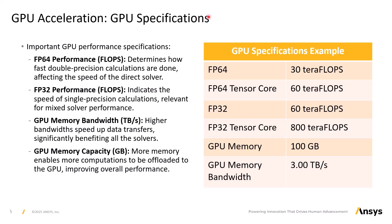Most manufacturers provide a data sheet for their GPUs. Here are the four most important specifications you should look for. First, FP64 performance, measured in FLOPs — floating point operations per second. The FP64 performance is the number of double precision operations per second, and it determines how fast double precision calculations are done. This directly affects the speed of the direct solver.